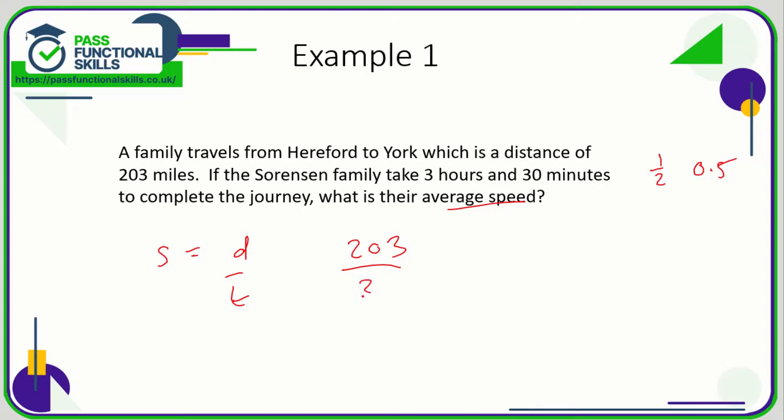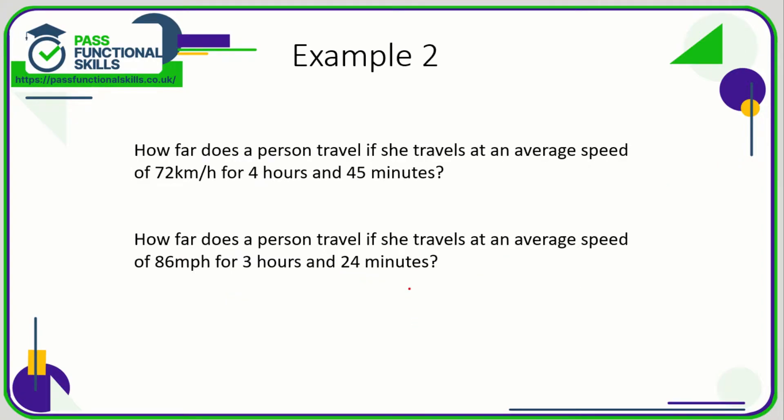Normally this is the stumbling block for certain people: converting time into decimals. 203 divided by 3.5 comes to 58, and the unit for the speed is going to be miles per hour because the distance is in miles and the time is in hours. Let's look at another example.